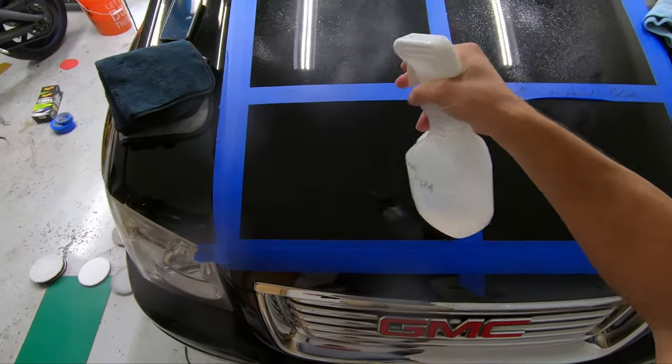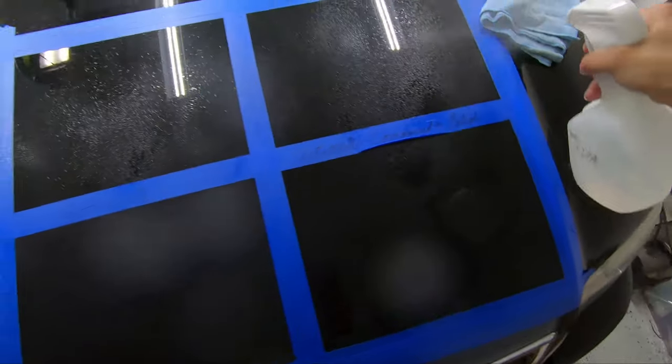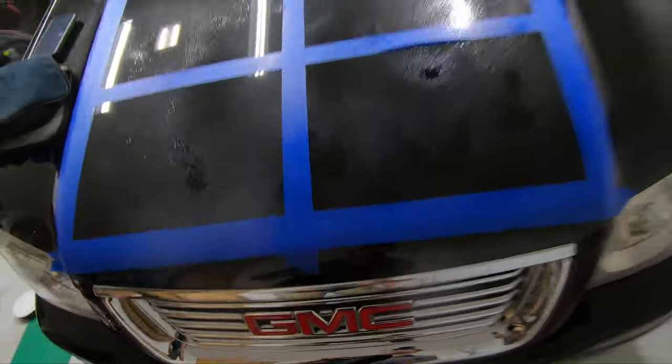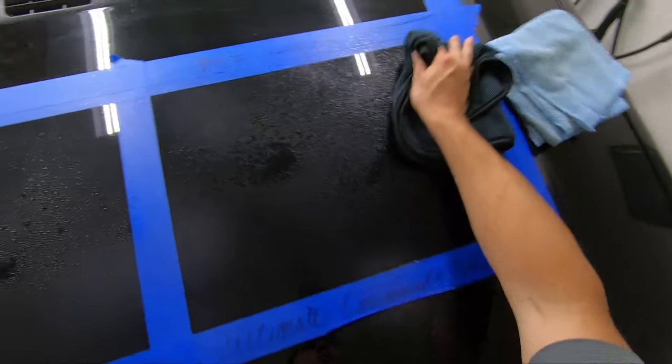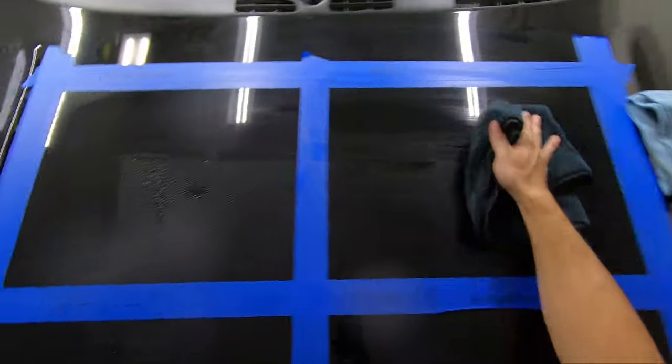Now before we actually remove the tape, we're going to do an IPA wipe down, just remove any oils on the surface that may be filling in scratches or swirls, as some polishes tend to do this. I also wish I would have realized that my lids had gotten dirty at some point, as there's just not really much I can do after recording it unfortunately.